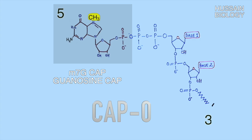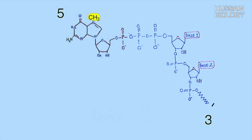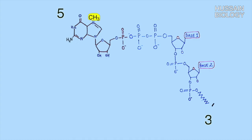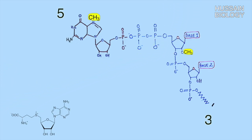Furthermore, there are modifications to the cap zero structure. The enzyme 2'-O-methyltransferase generates modified cap structures of the mRNA molecule, but it must be noted that this enzyme requires mRNA with the guanosine cap as a substrate. The 2'-O-methyltransferase enzyme adds a methyl group onto the hydroxyl group of the first ribose sugar of the mRNA molecule, and this structure is called the cap one structure.